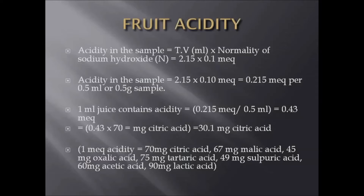Now it is acid in milliequivalents. That value equals 0.43 into 70 milliequivalents of citric acid, that is equal to 30.1 mg of citric acid. Here we converted milliequivalents to milligrams of citric acid. Here, 1 milliequivalent of acid equals 70 mg of citric acid.